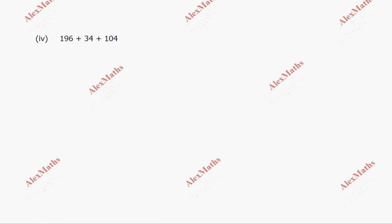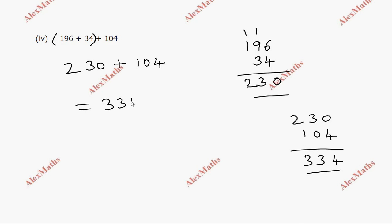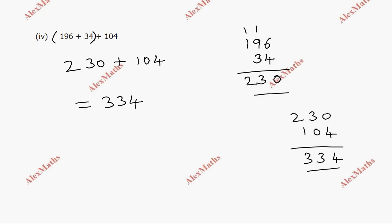Subdivision 4: adding 3 numbers. First add the first two numbers: 10 plus 3 equals 13. Then add the third number: 13 plus 2 gives 230 plus 104 equals 334. Using the associative property under addition, we add the first two numbers and then add the third — so the property used here is associative under addition.